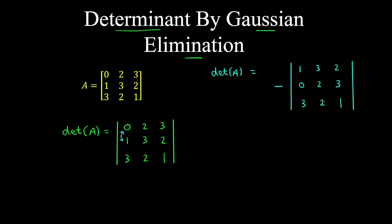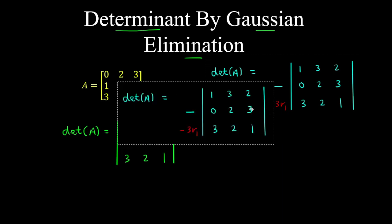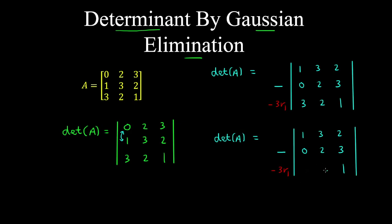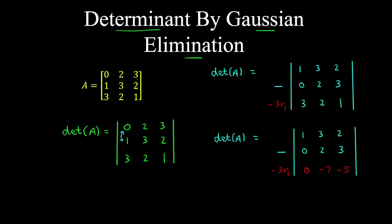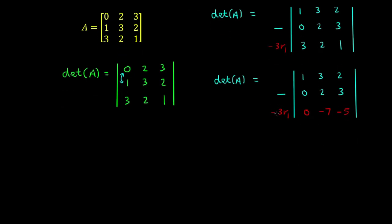And then we want to get zeros below the diagonal. So we subtract 3 times row 1 from row 3. So let's copy our result down here. We get 3 minus 3 is 0, 2 minus 9 is minus 7, and 1 minus 6 is minus 5. So adding a scalar multiplied by a row to a row does not alter the determinant.